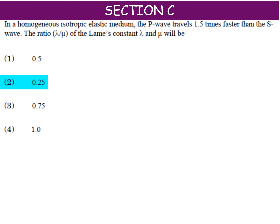The next question is a numerical which is very interesting and has appeared in past year papers. It is about Lame's constant. Lame's constant is repeatedly coming in the exam. The question states: in a homogeneous isotropic elastic medium, the P-wave travels 1.0 times faster than the S-wave. The ratio of lambda upon mu of Lame's constant will be what? Lame's constant has two formulas.